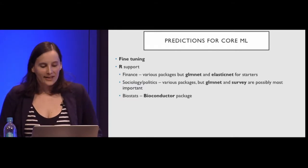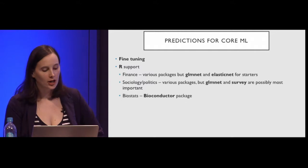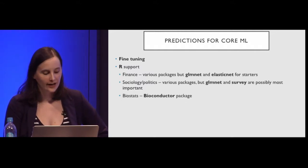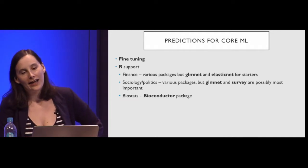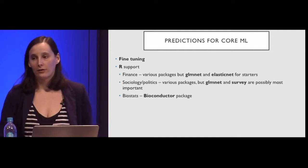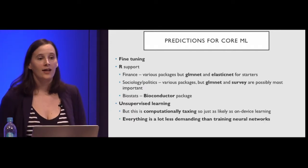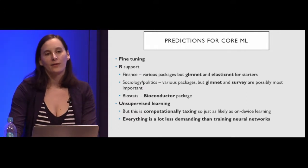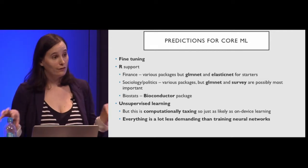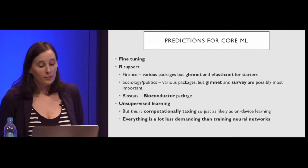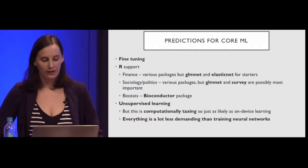Another thing that seems missing is R support. Other than Python, R is the other big data science language — it's been around a long time and tends to be the choice of academics, people in finance, biostats, and politics. There are obvious packages you'd want to convert, and I think Apple probably has it in mind for next year. Also missing is unsupervised learning — every kind of machine learning Apple currently lets you implement has to do with prediction or classification, rather than just learning from data.